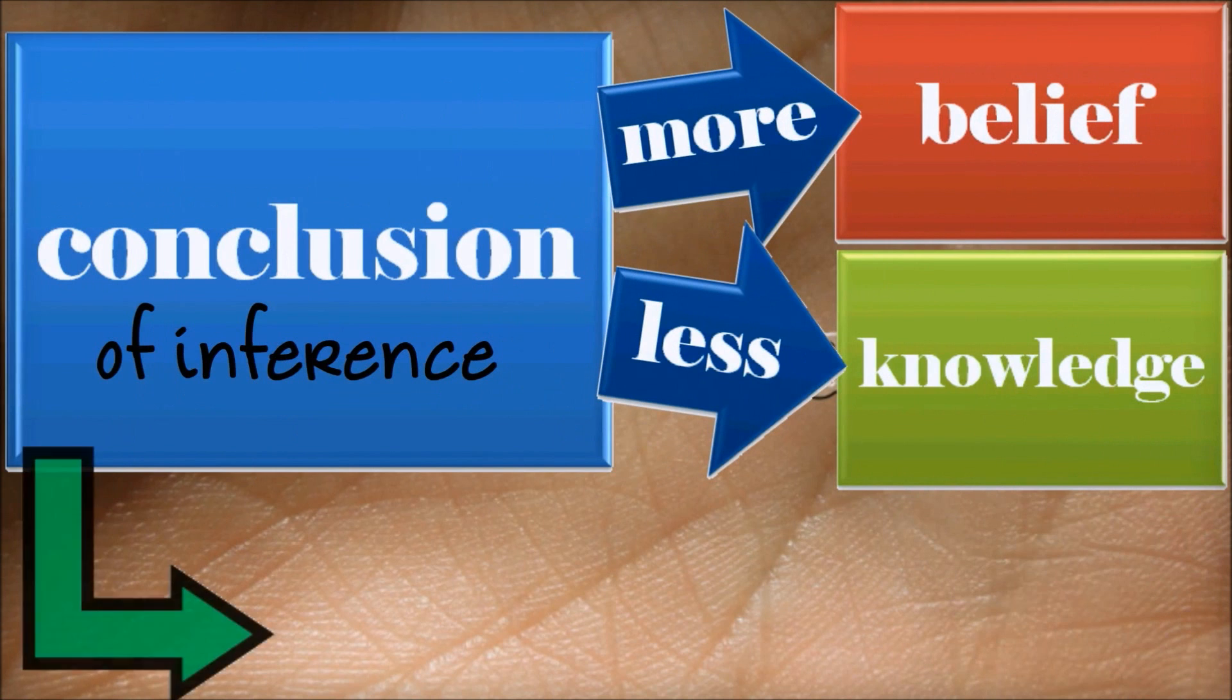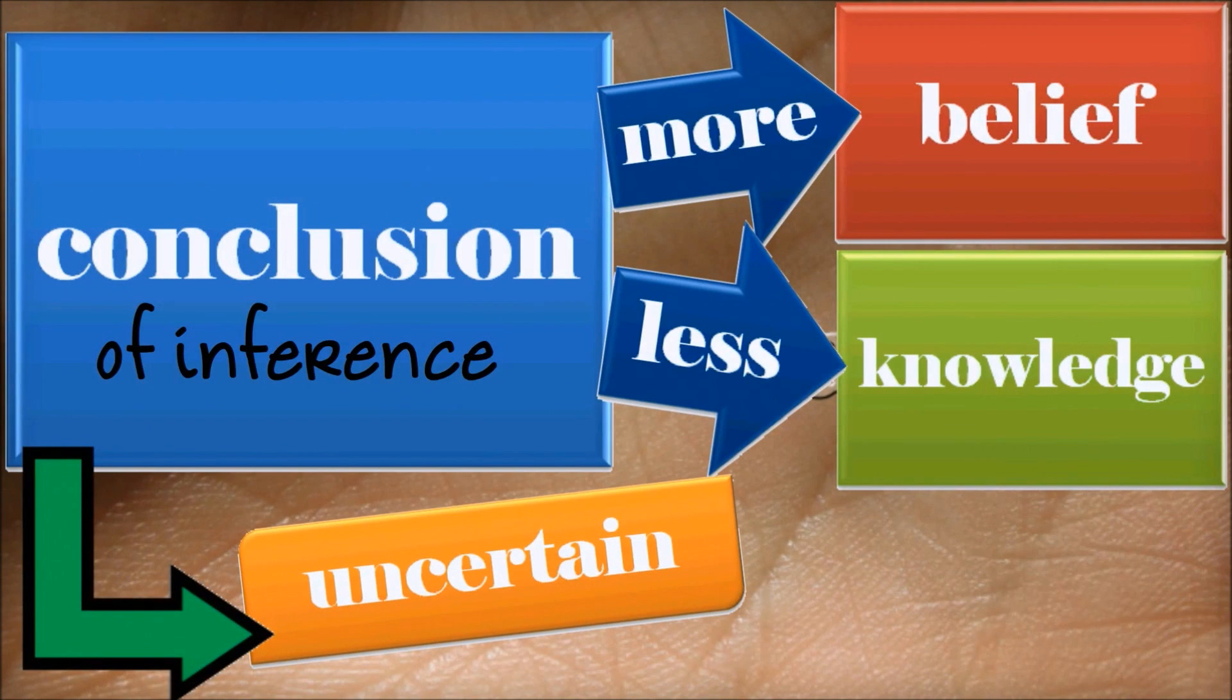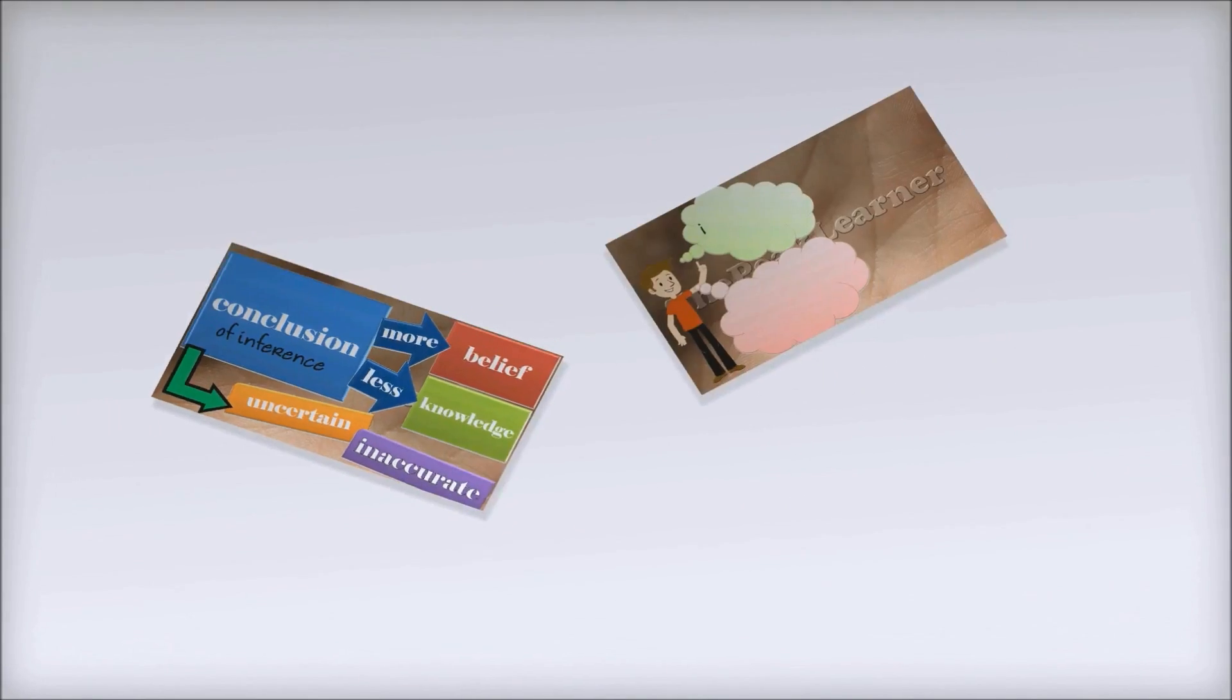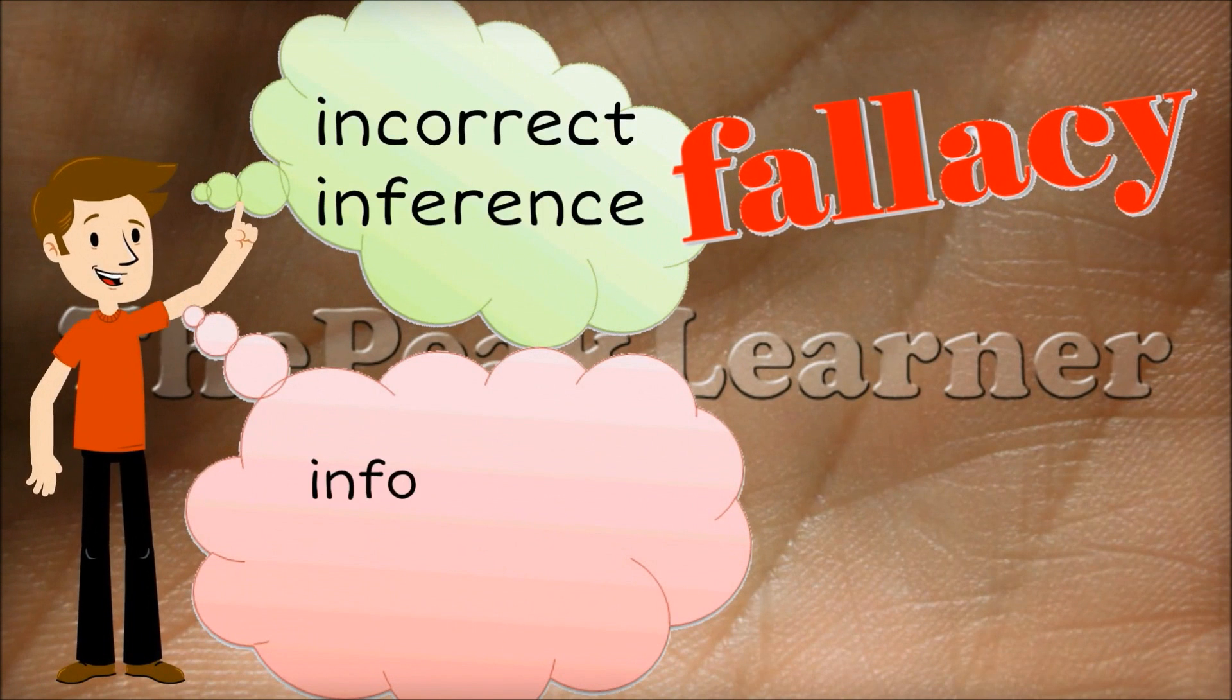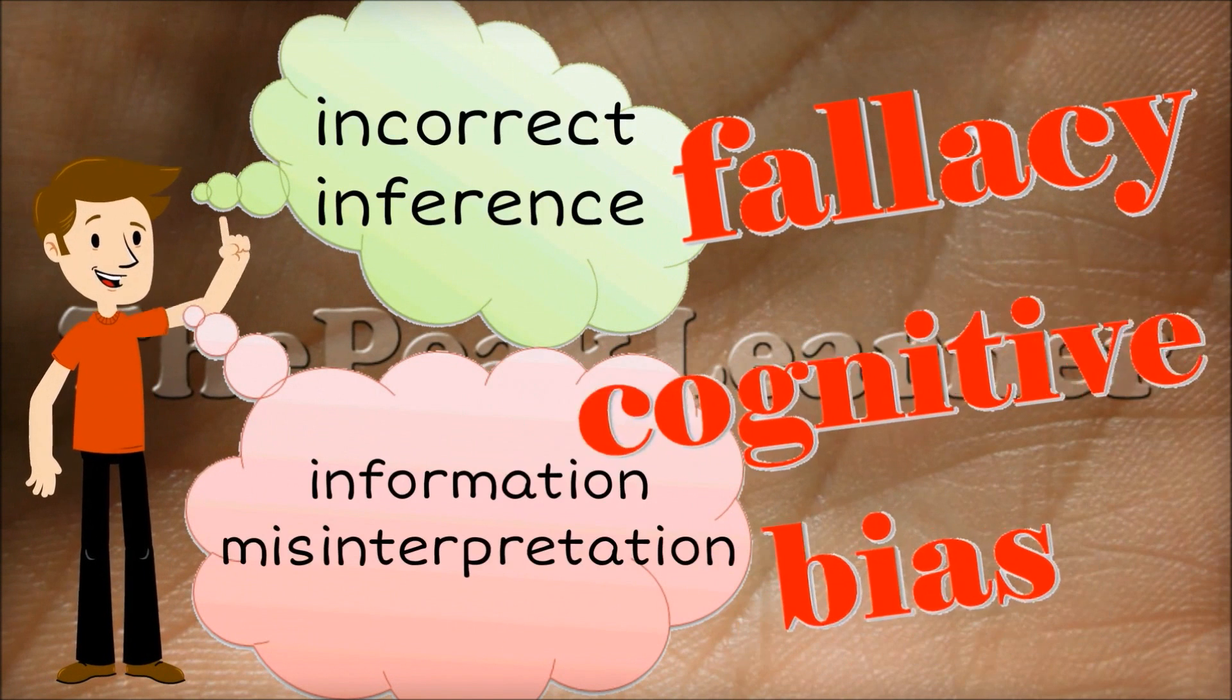Finally, the conclusion reached through inference is called belief rather than knowledge because it's often uncertain and even inaccurate. An incorrect inference is called a fallacy and a misinterpretation of information, a cognitive bias.